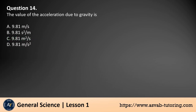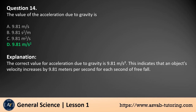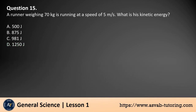Question 14. The value of the acceleration due to gravity is: a. 9.81 meters per second. b. 9.81 square seconds per meter. c. 9.81 square meter per second. d. 9.81 meters per square second. The answer is d. The correct value for acceleration due to gravity is 9.81 meters per square second. This indicates that an object's velocity increases by 9.81 meters per second for each second of free fall.